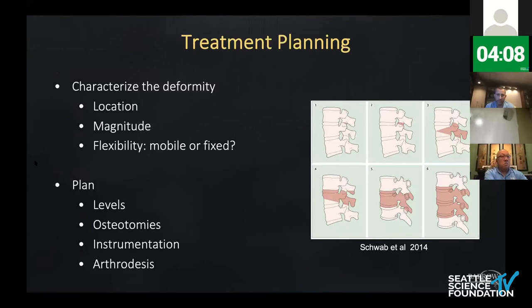When it comes to treatment, the first step is characterizing the deformity. That starts with 36-inch standing x-rays and includes all adjuvant imaging. You want to define the location of the deformity or deformities, the magnitude of the deformity, and one really critical piece: the flexibility. Understanding whether the deformity is mobile, rigid, or completely fixed has a huge impact on what type of surgery you'll need to do for the patient.